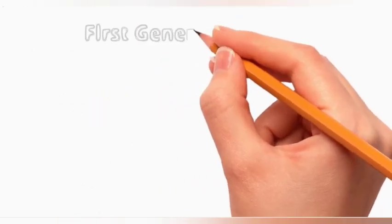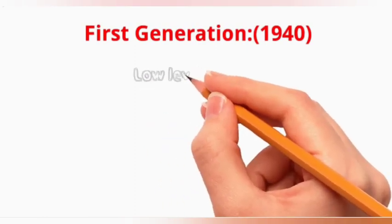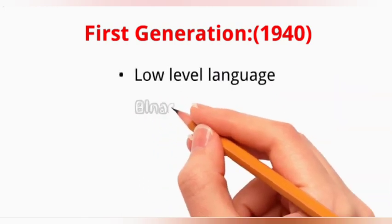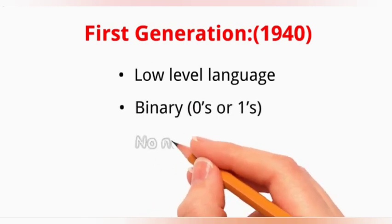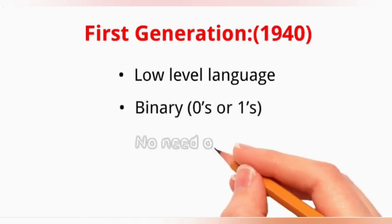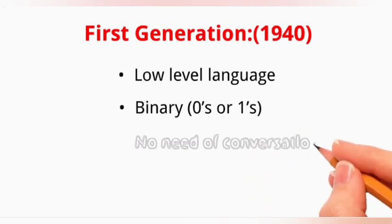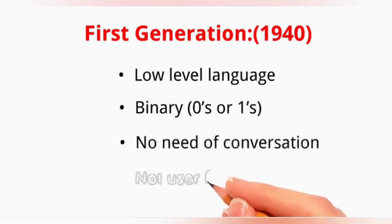Let's see the first generation. The first language was developed in 1940, that is machine language, and it comes under the category of low-level language. In this generation, programs were written in zeros and ones, that is binary. There is no need for conversion, so the computer can execute efficiently with less chance of error. The drawback is programmers are not able to write code easily because they are not aware of computer internal architectures.